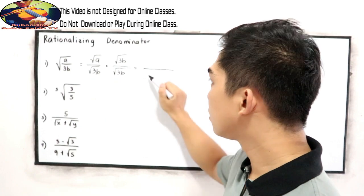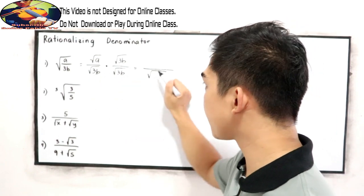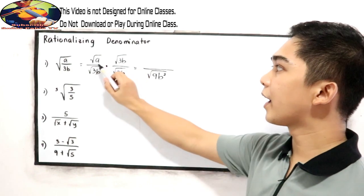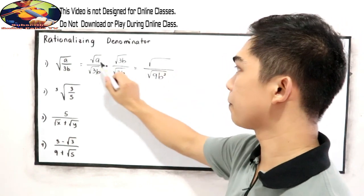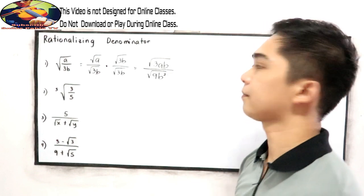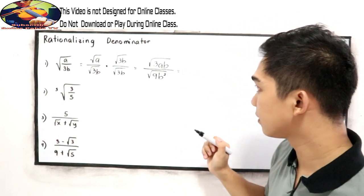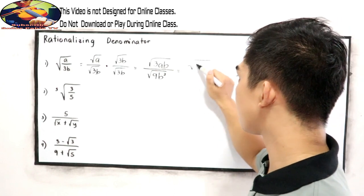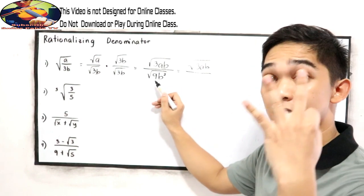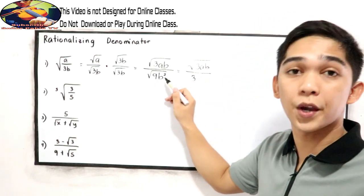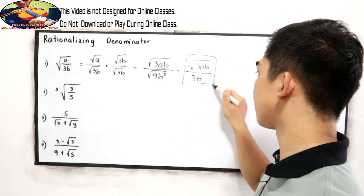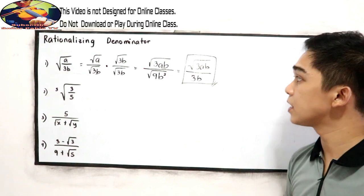So we're going to multiply the square root of 3b in the denominator and in our numerator so that it will give us a perfect expression in our radical. Multiplying: square root of 3b times 3b gives us b squared. And in our numerator, square root of a times 3b gives us 3ab. Simplifying: in the numerator, square root of 3ab all over the square root of 9, that is 3, times square root of b squared, that is b. So the final answer is the square root of 3ab all over 3b.